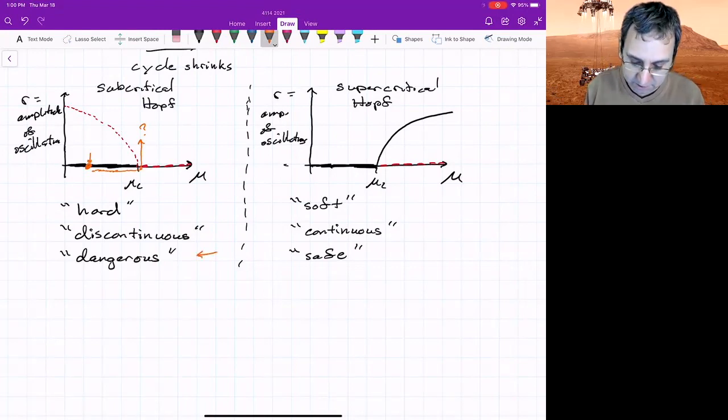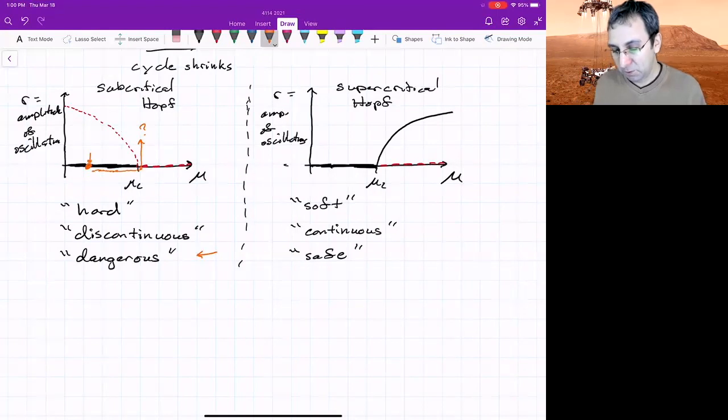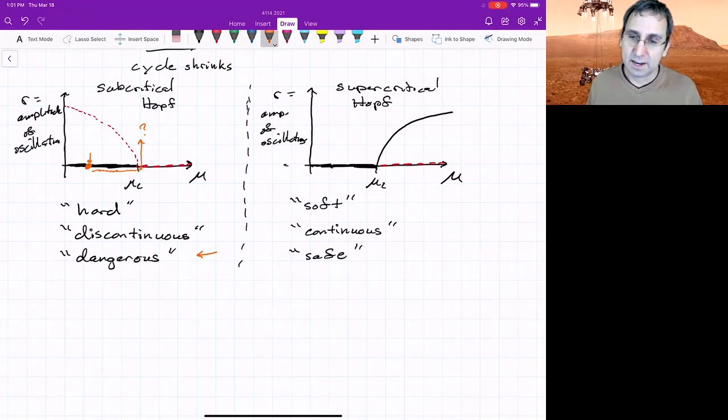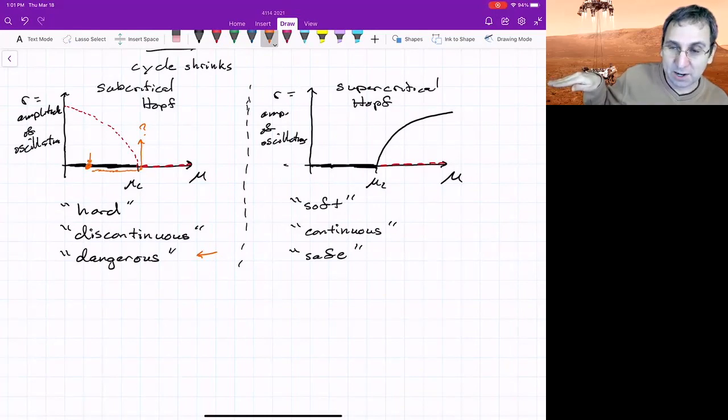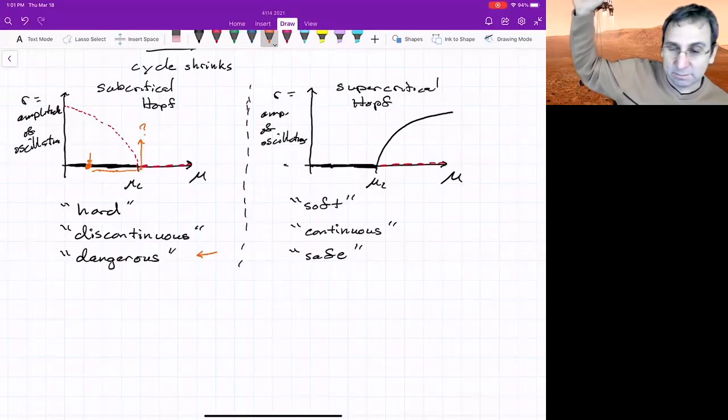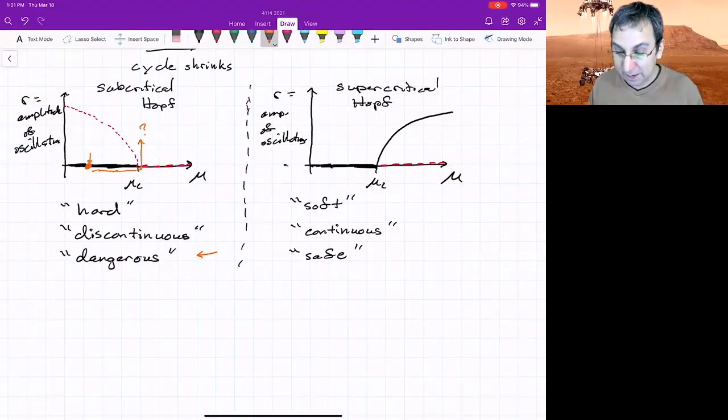And now I shoot up to, I don't know where, perhaps some distant attractor that could be, could correspond to large oscillations or just something far away. I've gone away from my control point. And that's why this is called dangerous. So think of this left-hand side, the varying of a parameter could be changing the speed of an airplane.